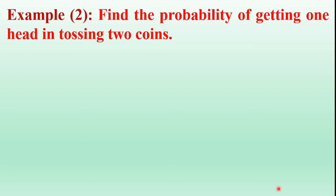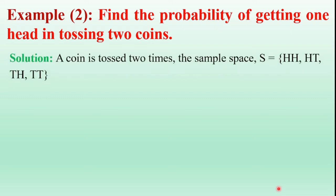One more example: Find the probability of getting one head in tossing two coins. Tossing two coins, totally there are four possible outcomes. The total number of outcomes are four: head-head, head-tail, tail-head, tail-tail. The total number of possible outcomes in tossing two coins is four.